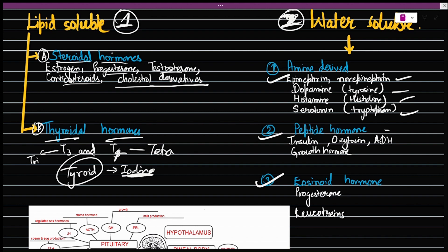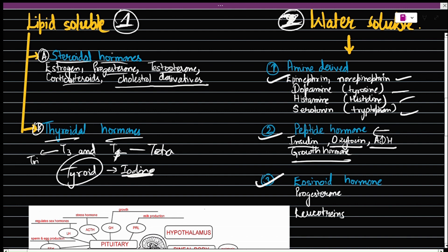While peptide-derived, they contain insulin, oxytocin, ADH (antidiuretic hormone), growth hormone. And eicosanoid hormones contain prostaglandins, leukotrienes, etc.